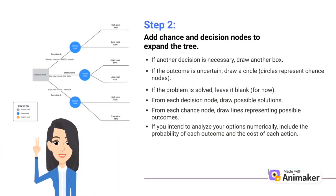Second, add chance and decision nodes to expand the tree as follows. If another decision is necessary, draw another box. If the outcome is uncertain, draw a circle — circles represent chance nodes. If the problem is solved, leave it blank for now. From each decision node, draw a possible solution. From each chance node, draw a line representing possible outcomes.